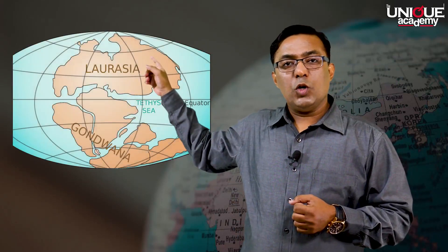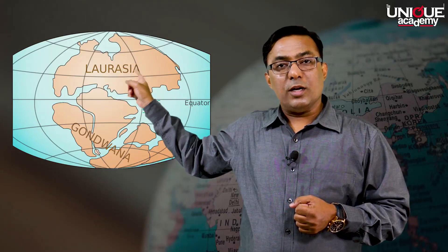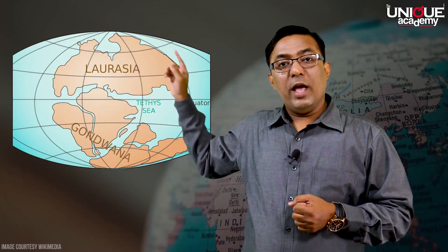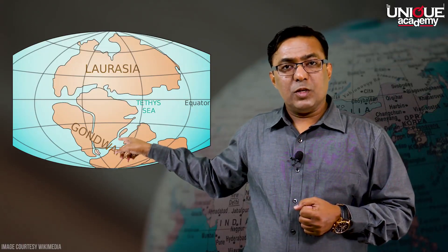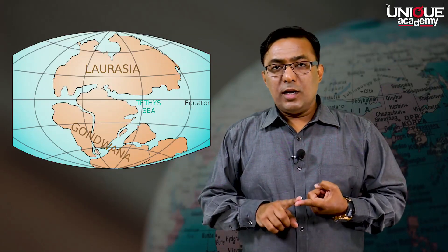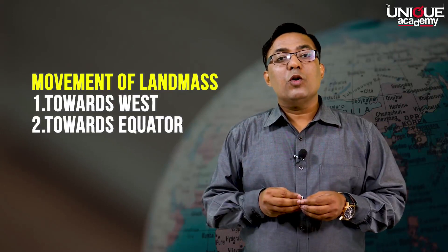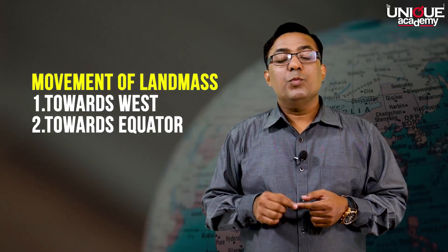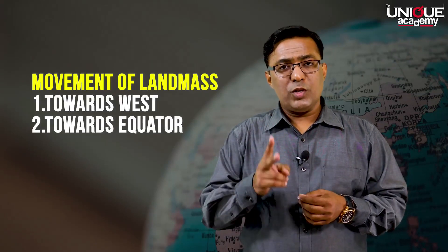Taylor said that initially during the Cretaceous period, the total landmass on the Earth's surface was divided into two parts. In the Northern Hemisphere near the North Pole, you have Laurasia or the Angara land. In the Southern Hemisphere near the South Pole, you have the Gondwana land. Because of the tidal forces of the moon, there were two types of movements: the movement of the landmass towards the west, and the movement of the landmass towards the equator.